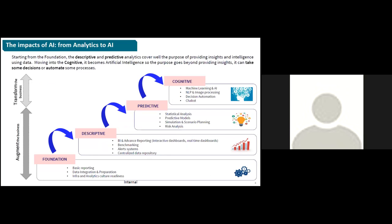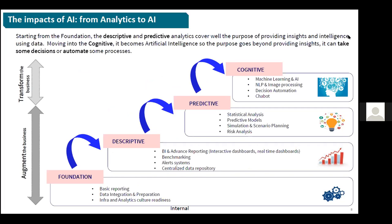With the evolution of AI and machine learning in our business, we have different levels that provide different levels of value. The foundational capability is at least to collect data, provide basic reporting, and support decision-making. Above that, descriptive analytics provides interactive dashboards, even real-time dashboards. We can do benchmarking and obtain the KPIs needed for decision-making. We also have a centralized data repository.